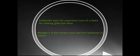As a goldsmith has to melt gold and silver to make ornaments, he has to use the zone having the highest temperature. Hence, he uses the outermost zone, which is the non-luminous zone, having a temperature of around 800 degrees centigrade.